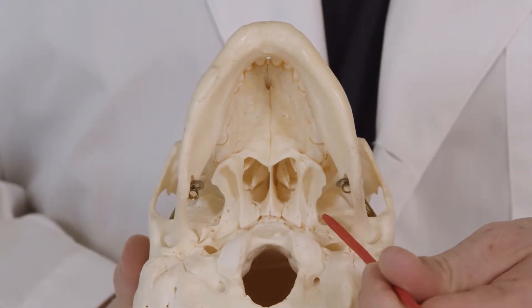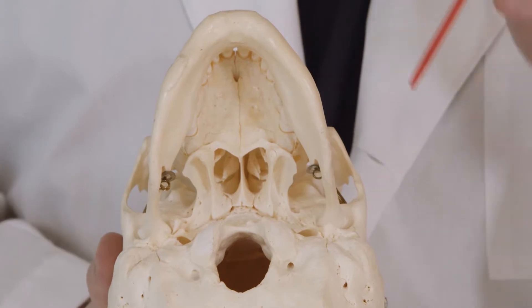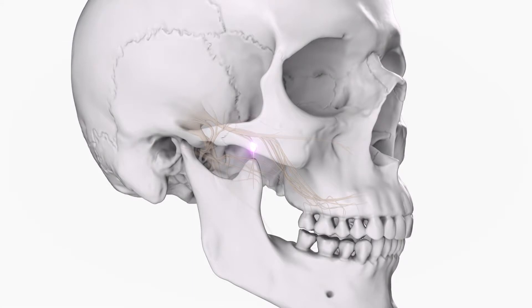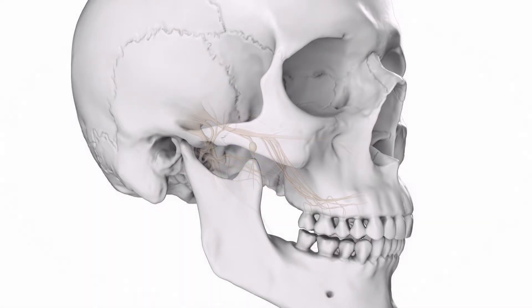The maxillary nerve exits the cranium through the foramen rotundum to reach the pterygopalatine fossa where it gives off several branches: the zygomatic nerve, the pterygopalatine nerve, and the posterior superior alveolar nerve. The zygomatic nerve enters the orbit through the inferior orbital fissure; its branches supply the skin on the side of the forehead and prominence of the cheek. The short pterygopalatine nerve trunks descend vertically through the pterygopalatine ganglion, distributing sensory fibers to the mid-face, including orbital nerves, posterior nasal nerves, nasal turbinates, and posterior nasal septum.